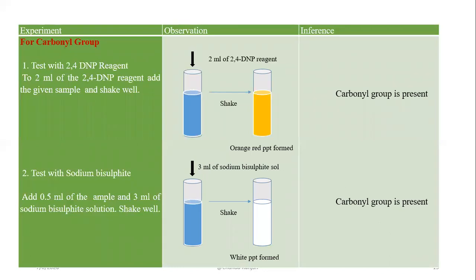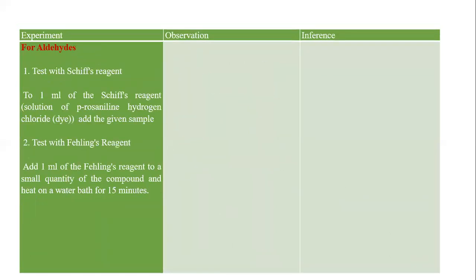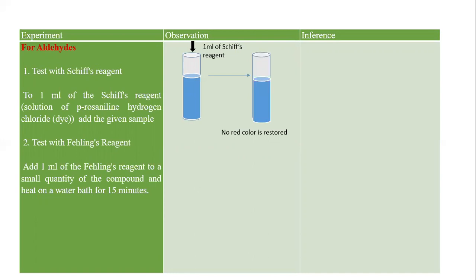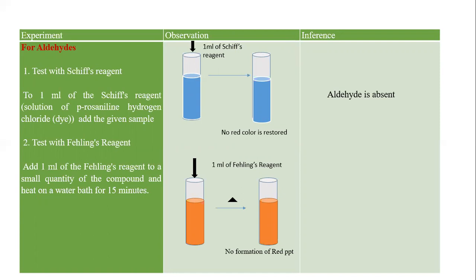Since carbonyl is present, we now have the possibility that either an aldehyde or ketone is present. We perform Schiff's reagent test — no red color is restored, showing aldehyde is absent. We also perform Fehling's reagent test — no formation of red precipitate, which also shows aldehyde is absent. These two experiments together show that it is a ketone that is present in the given sample.